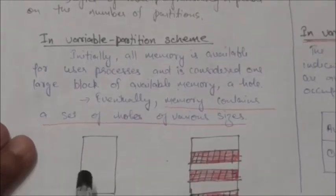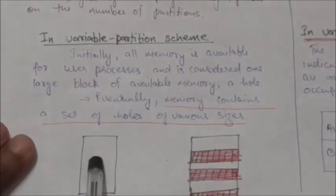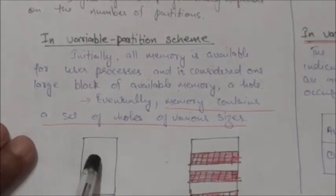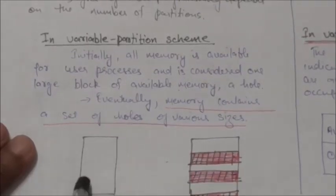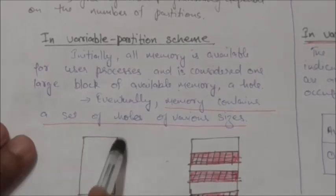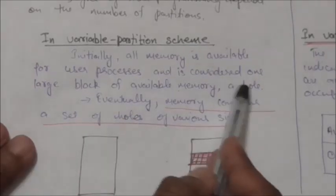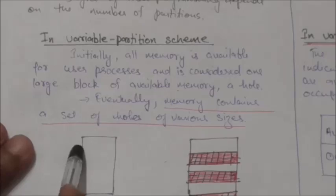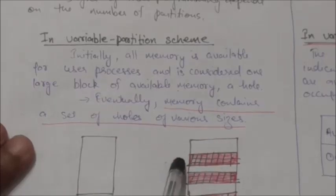In contiguous memory allocation, in a variable partition scheme, initially all memory is available for user processes and is considered as one large block of available memory — a hole. Eventually, memory contains a set of holes of various sizes.